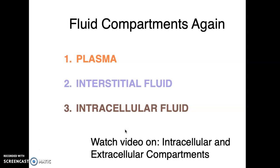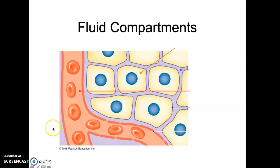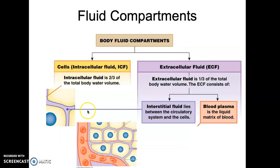To review the fluid compartments again: it's the intracellular, the interstitial, and the plasma. There is a video on this also available for you — you should watch it. It's named 'Intracellular and Extracellular Compartments.' This is a much better picture than the one I showed you last time. You have a cell; water could be inside the cell or outside the cell, which would be in the bluish-purple interstitial region or inside the actual plasma. The equilibrium between all of those is crucial. The intracellular is about two-thirds of the total body water volume, and the extracellular — made up of both interstitial fluid surrounding the cell and blood plasma — is about a third of total body water volume.